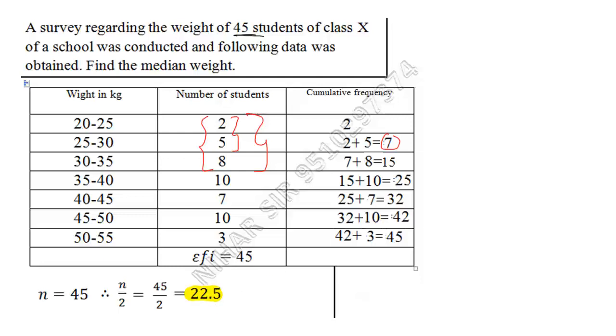Now find the cumulative frequency which is just bigger than 22.5. Is it bigger than 22.5? No. Is 7 bigger than 22.5? No. Is 15 bigger than 22.5? No. Is 25 bigger than 22.5? Yes. This is just bigger. This is also big, this is also big, but this is just bigger, closest bigger number. This is closest to 22.5 and bigger among all this.